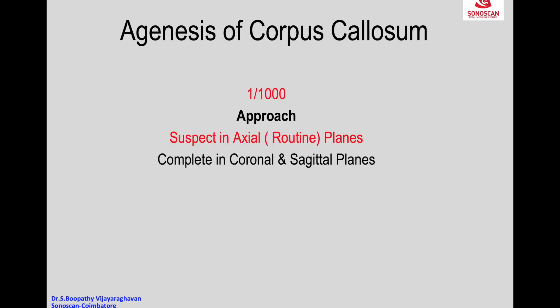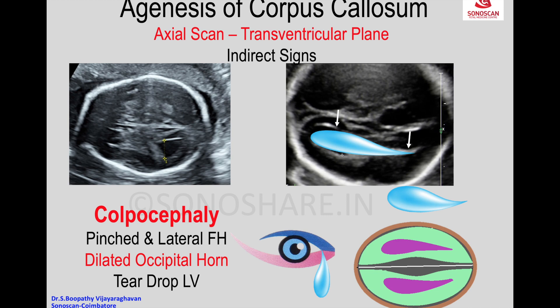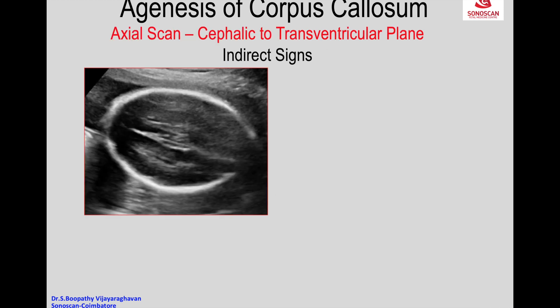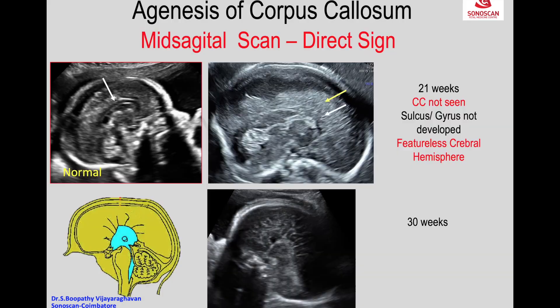Diagnosis is completed by taking coronal and sagittal planes. The diagnosis by indirect signs in the axial and coronal planes, and the direct signs are best seen at or after 22 weeks, because development of the corpus callosum is not complete till 20 weeks. The signs may be present earlier, and that is the schematic showing the teardrop appearance on both sides. The next indirect sign is the wide interhemispheric fissure, shown as three lines concave inside, giving rise to a cow horn or comma-like appearance instead of the normal goat horn.